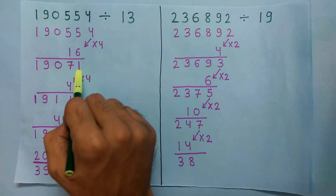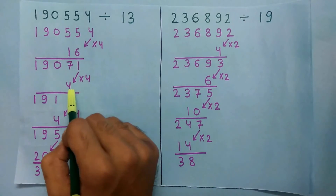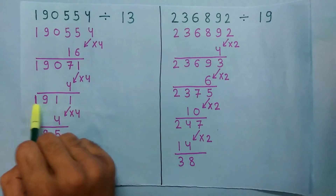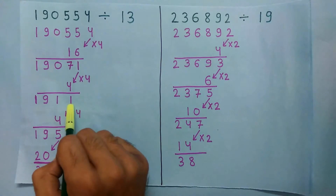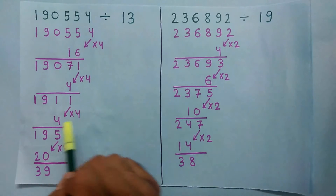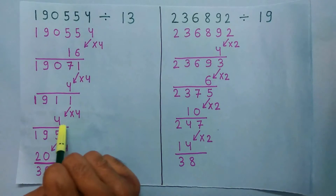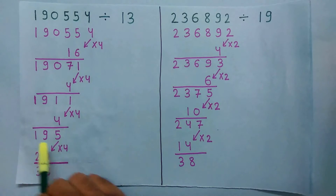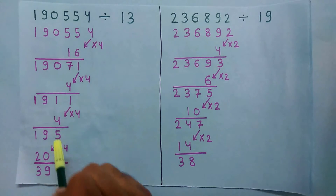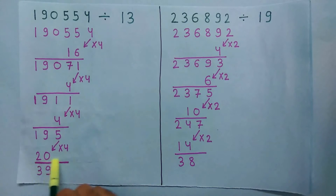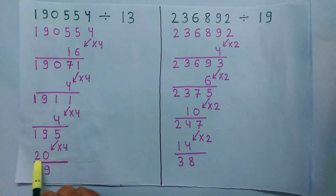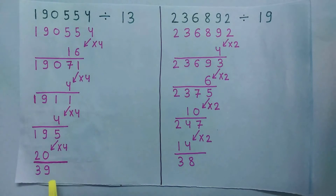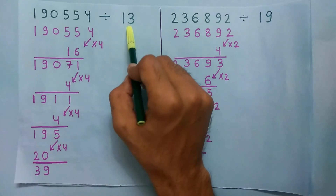Again multiply the last digit by 4 and we get 4. Now add 4 to the remaining number and we get this number. Again multiply the last digit by 4 and we get 4. Add 4 to the remaining number and we get this number. Again multiply the last digit by 4 and we get 20. Now add this 20 to the remaining number 19 and we get 39.